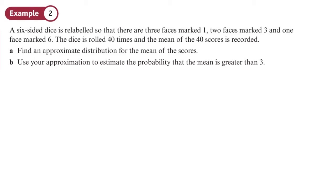In this next example, we've got a 6-sided dice that is relabeled: 3 faces are marked with a 1, 2 faces marked with a 3, and 1 face marked with a 6. The dice is rolled 40 times and the mean of the 40 scores is recorded. Find an approximate distribution for the mean of these scores. This is like 40 samples taken, so N equals 40.